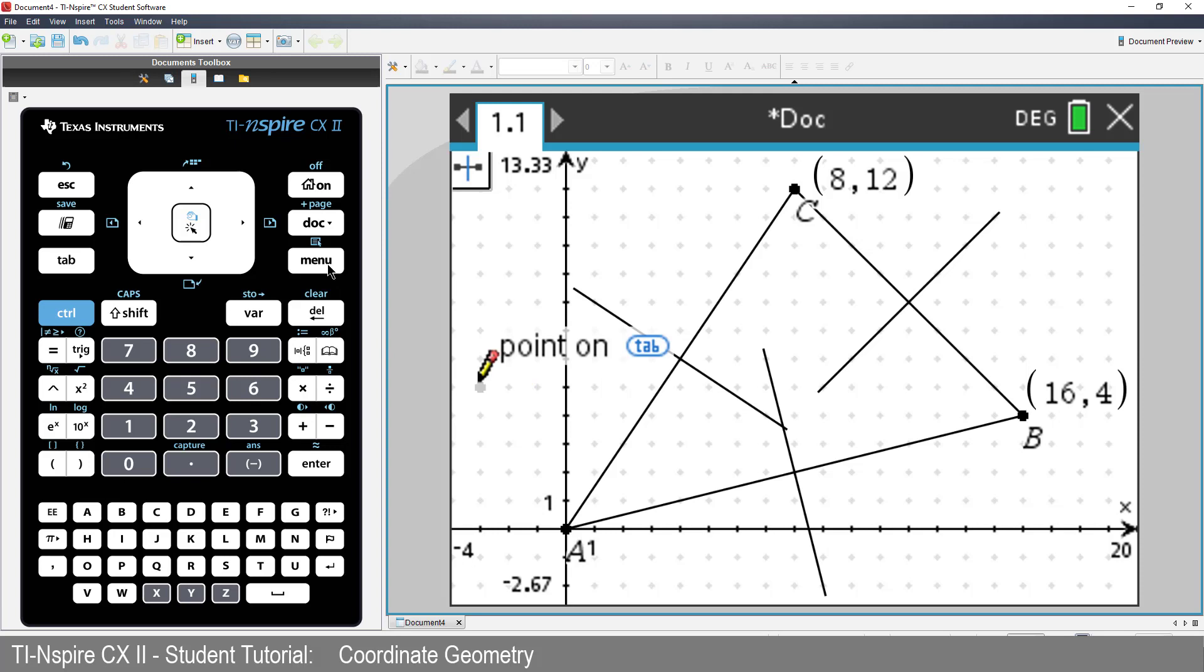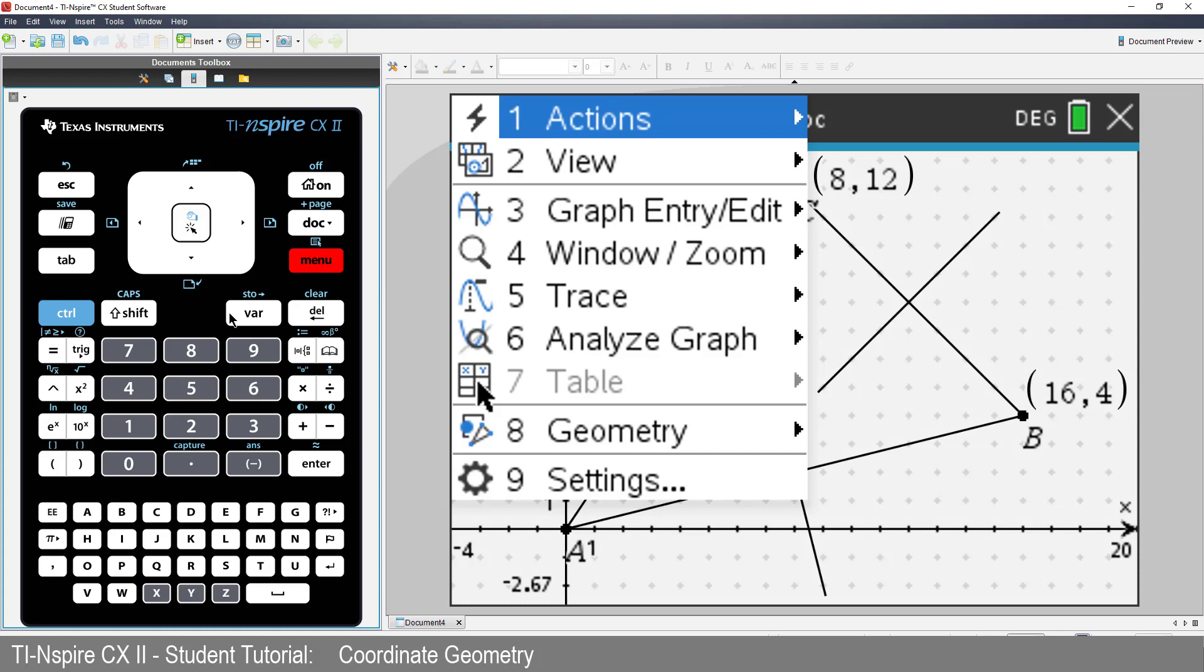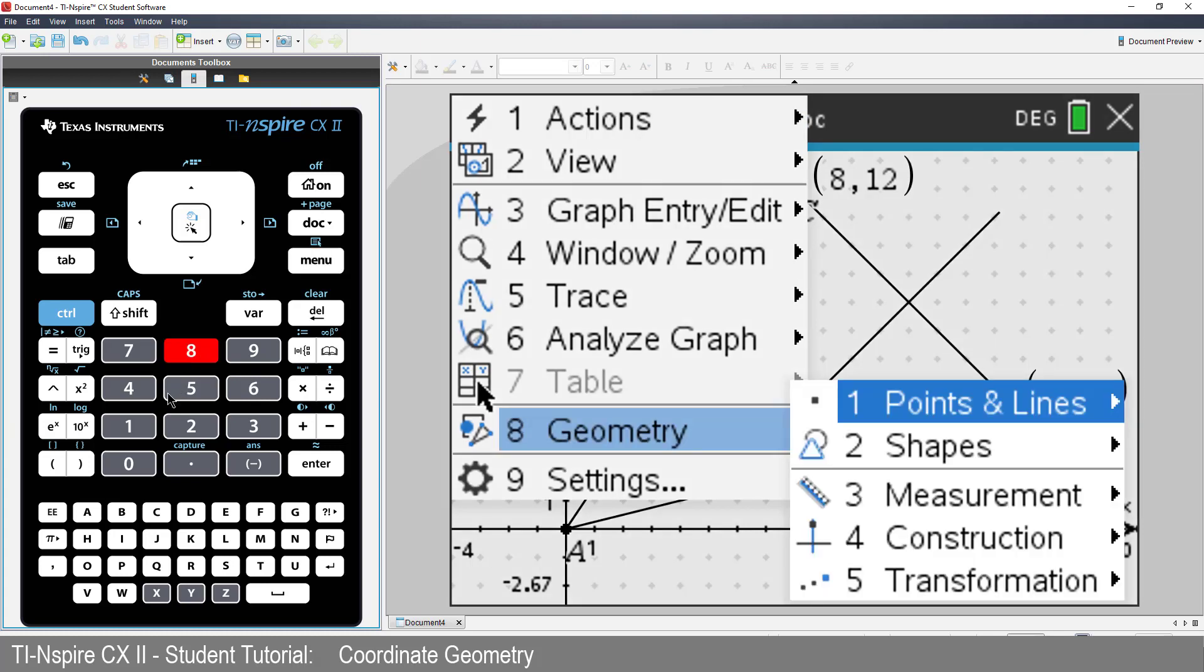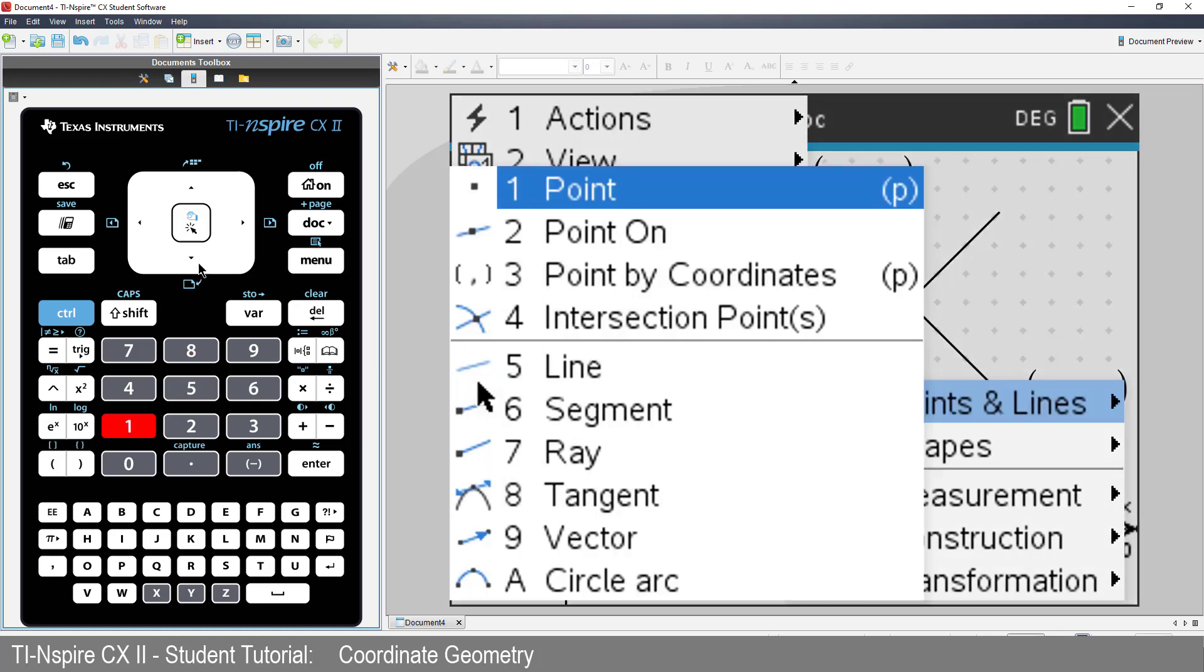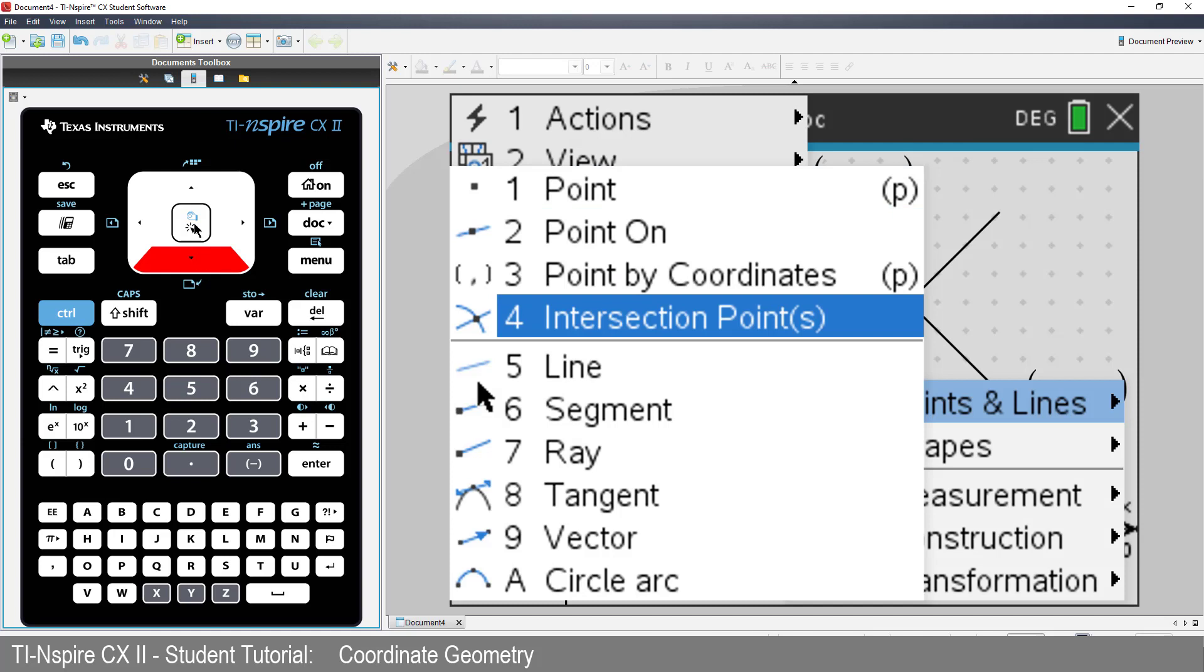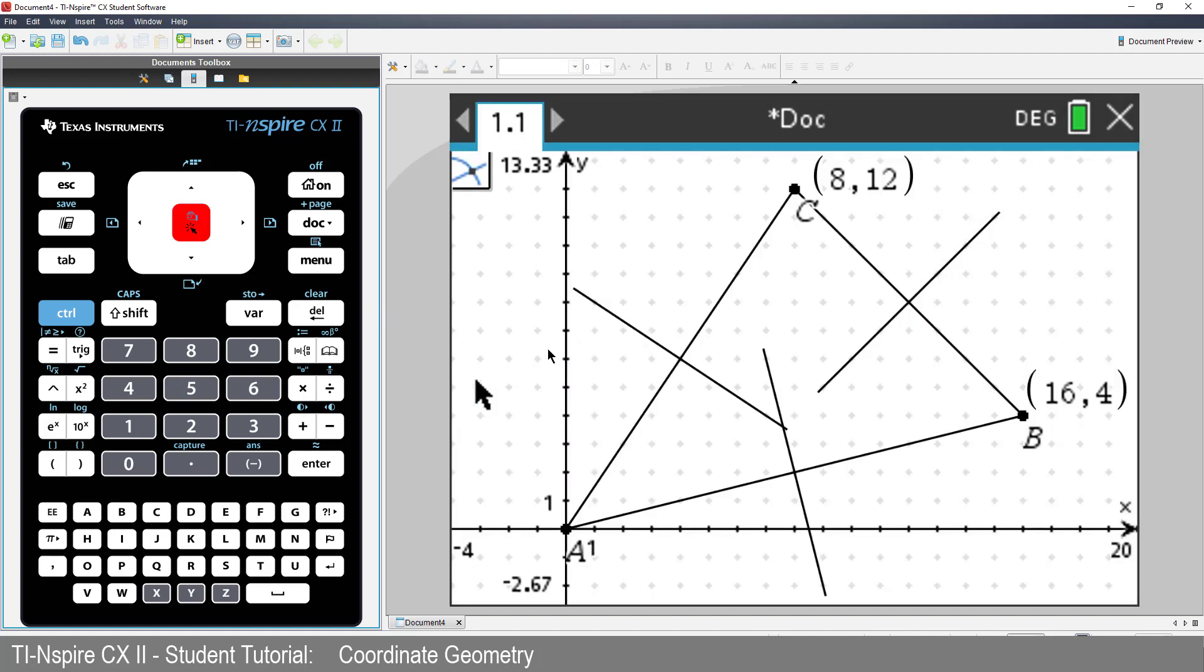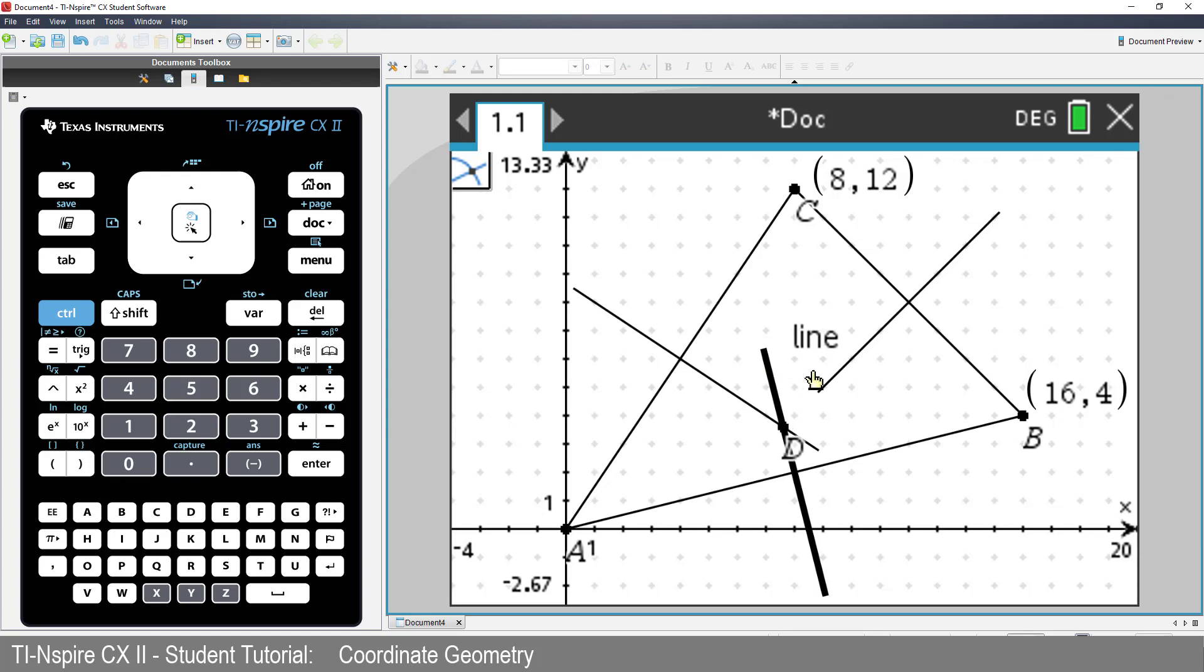We can use the Geometry tool to explore. Press Menu, Geometry, Points and Lines, and select Intersection Point. Select two of the perpendicular bisectors, and Point D is created.